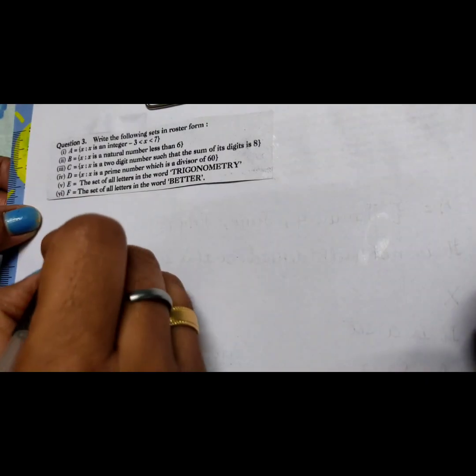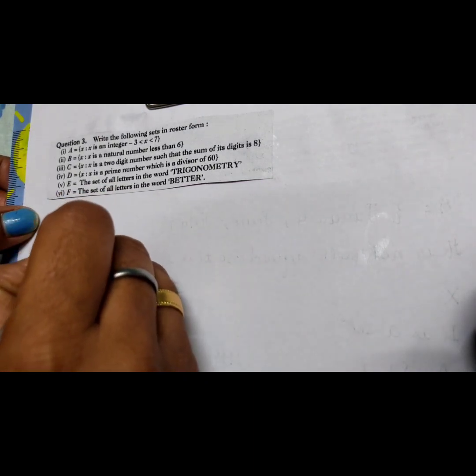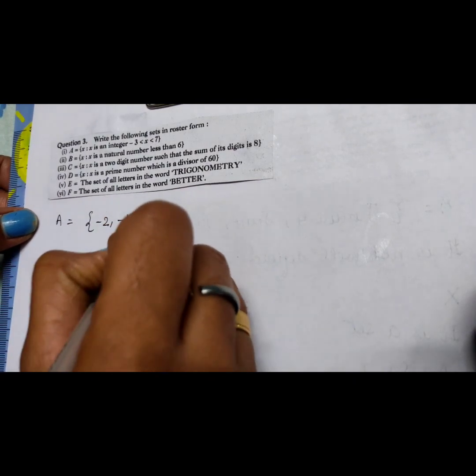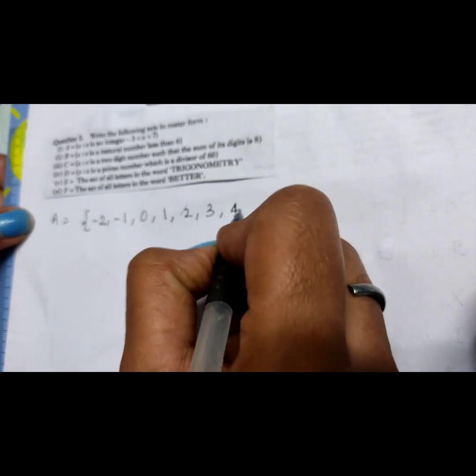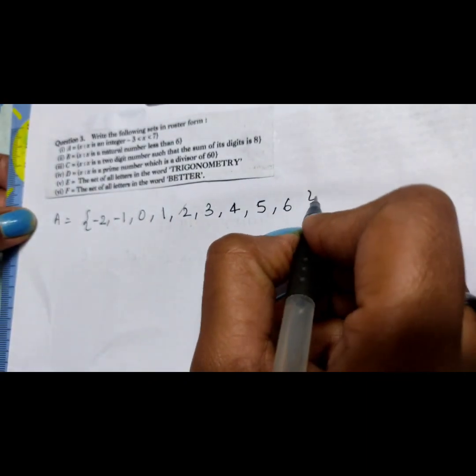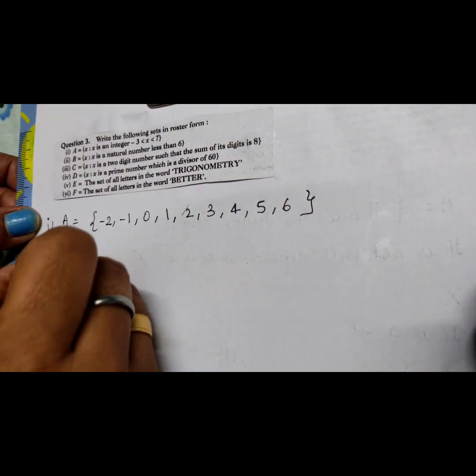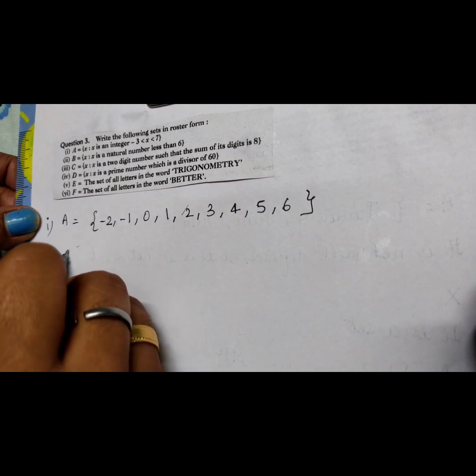Question number 3: A = {x : x is an integer, -3 < x < 7}. Write the following set in roster form. This is a set-builder form and we have to write these sets in roster form. For the first part, x should be greater than -3, so the elements are: -2, -1, 0, 1, 2, 3, 4, 5, 6. Six is included but not 7 since it is strictly less than.